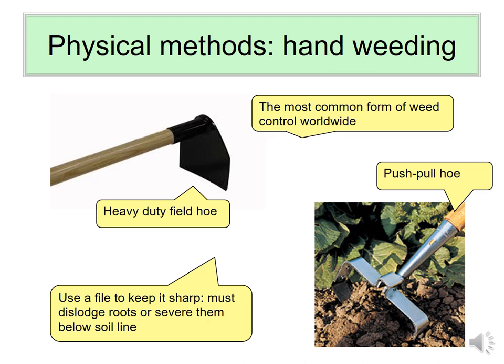Hand weeding is still one of the most common weed control measures worldwide, and relatively common in expensive organic fields in the U.S. One favorite tool is the push-pull hoe — also called the hula hoe. Keep these tools sharp; having a file on hand is important. Simply chopping off weeds at the soil line is not effective, as many weeds recover from a hidden node just below ground. For perennials, hand weeding is almost useless, but it can be very effective for annual weed seedlings.